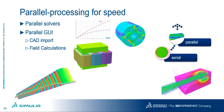Modern computers are supplied with processors that are no longer exhibiting increases in clock speeds; rather they're delivered with more and more cores. Opera's 3D solvers have been optimised to run in parallel with the minimum possible communication overheads.